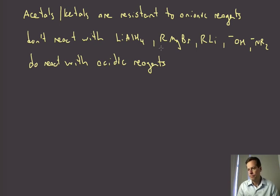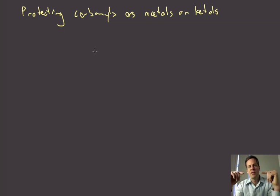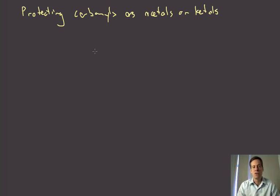Anionic reagents won't react because there's no available proton in an acetal or ketal to be deprotonated — so there's nothing that can happen. This turns out to be very useful, because now we have a straightforward way to protect an aldehyde or ketone if we need to use some of these other reagents elsewhere in the molecule. Anytime we have a protecting group, there are three things we need: the protecting group goes on, it's stable while we do other chemistry, and then it comes off.